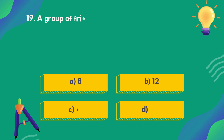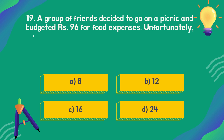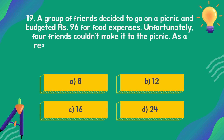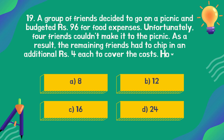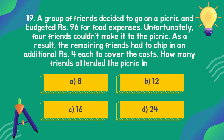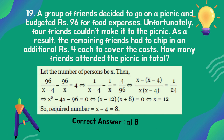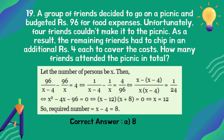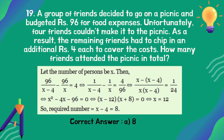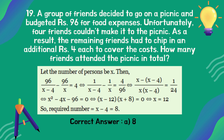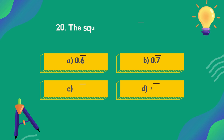A group of friends decided to go on a picnic and budgeted 96 rupees for food expenses. Unfortunately, four friends couldn't make it. As a result, the remaining friends had to chip in an additional four rupees each to cover the costs. How many friends originally planned to attend? The correct answer is option A: 8.